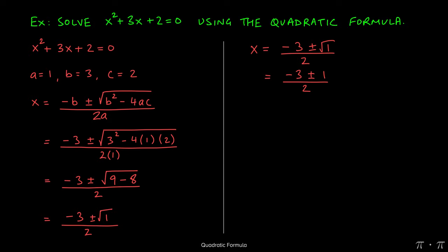So x turns out to be two numbers, the first number being negative 3 plus 1 all over 2. Let's simplify that before we go on to the second solution. Negative 3 plus 1 will give a negative 2 over 2, and then negative 2 over 2 simplifies to negative 1.